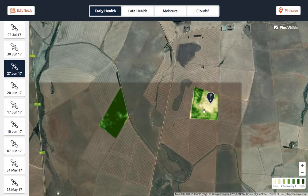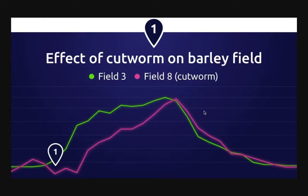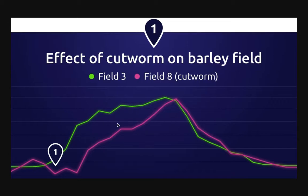I'm going to show you an example graph of this specific field. Field number eight, the pink line, was the field that was affected by the cutworm. Field number three is the field that wasn't affected by the cutworm. Here you can clearly see that this field is underperforming, and you would have been able to detect it earlier if you had a graph or if you closely looked at the maps over a period of time.